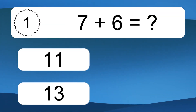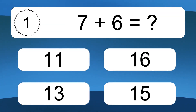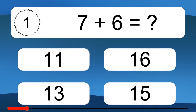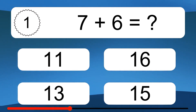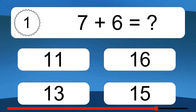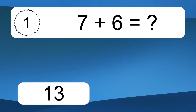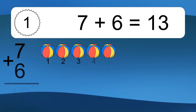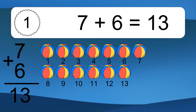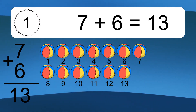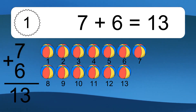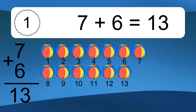7 plus 6 equals what? 7 plus 6 equals 13. Let's count it. 1, 2, 3, 4, 5, 6, 7, 8, 9, 10, 11, 12, 13.